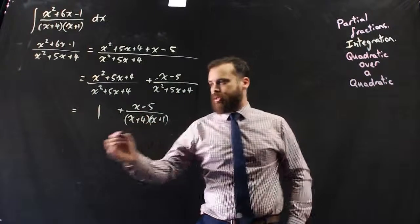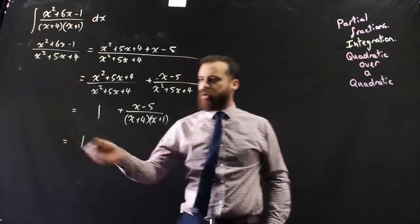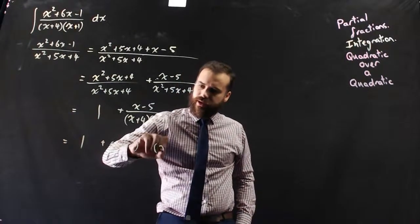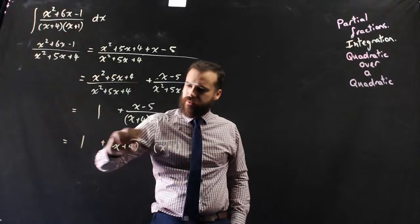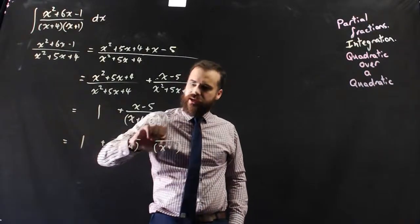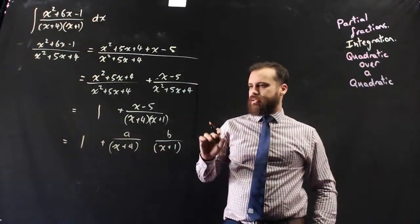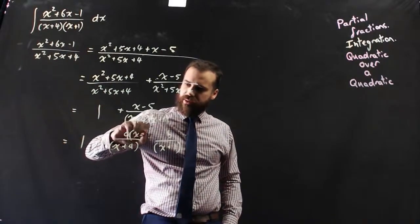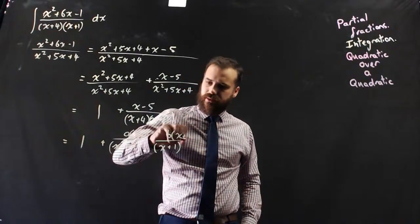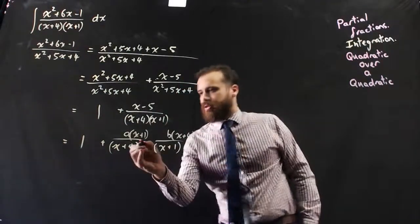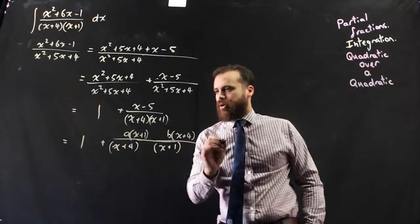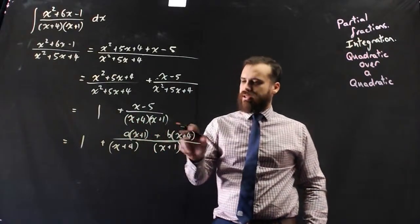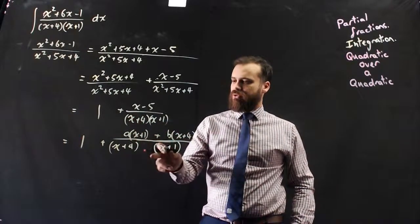So here's where I can start doing a partial fraction. I can just ignore the 1 for a minute, and I can do x plus 4, x plus 1. And here's my a, and here's my b. And now to add those, a times (x plus 1), b times (x plus 4), all of that's going to be over each other. So now I've got a(x plus 1) plus b(x plus 4) over (x plus 4)(x plus 1).